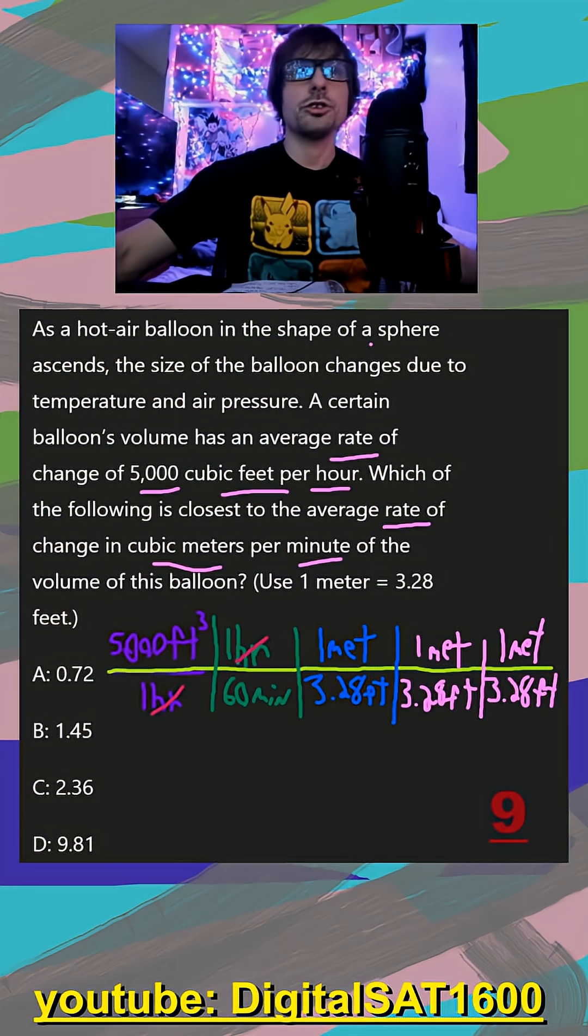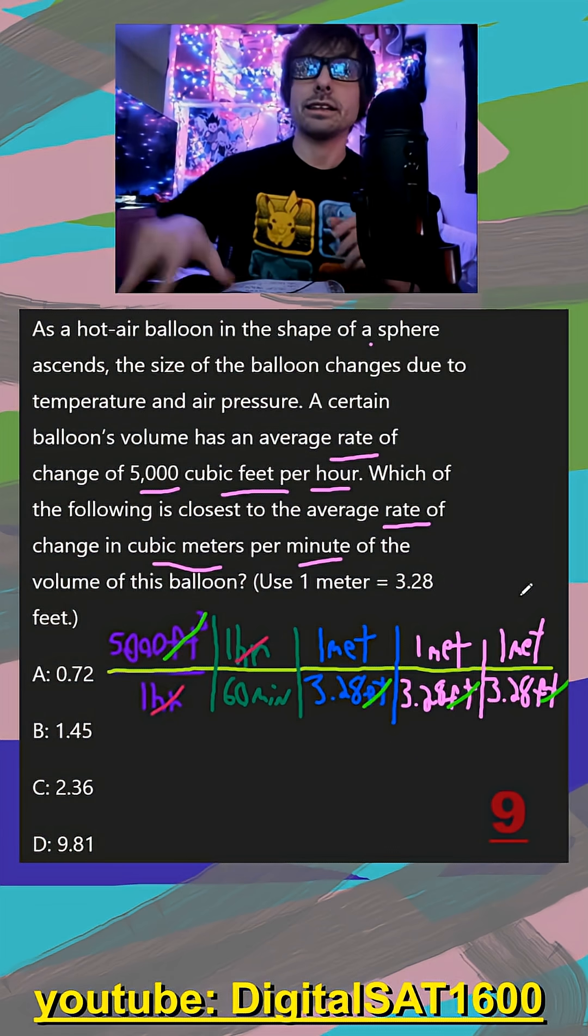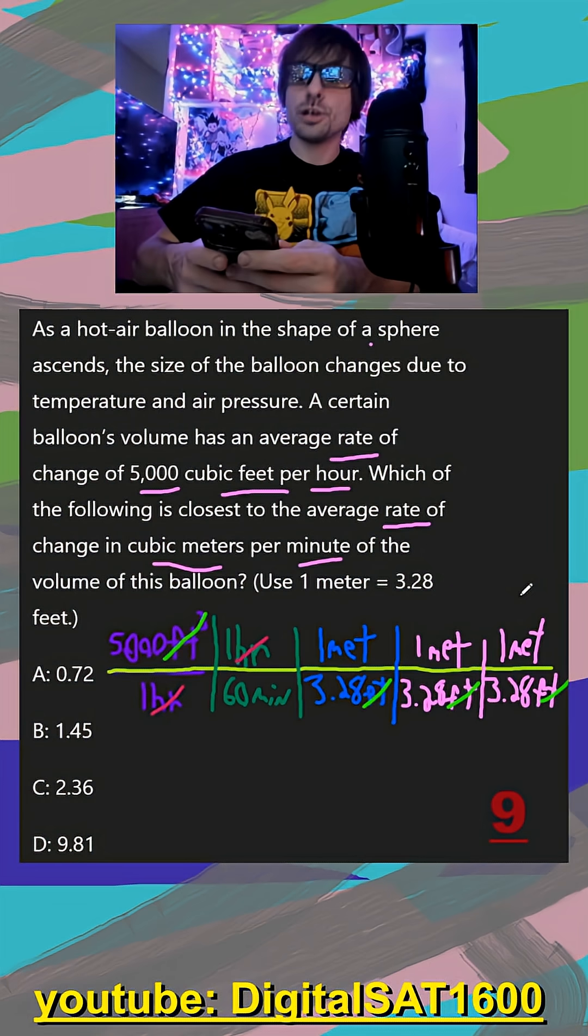Now let's make sure all our units match up. In the numerator, I have feet times feet times feet. In the denominator, I have feet times feet times feet. That cancels out. Now in my numerator, I have meters times meters times meters. So when I calculate this, I'm going to get meters cubed per minute.